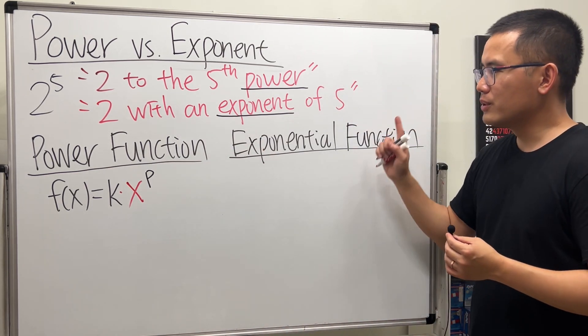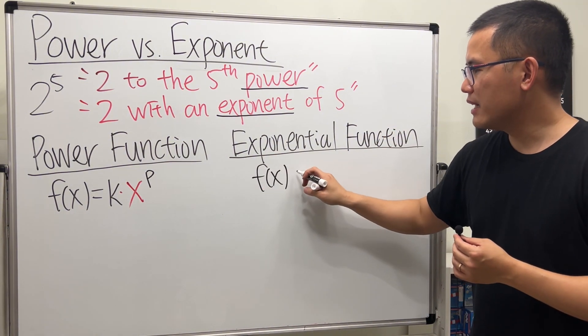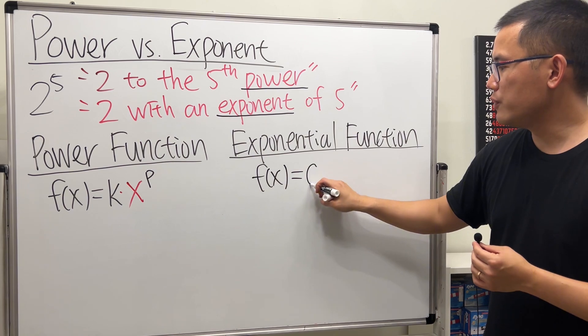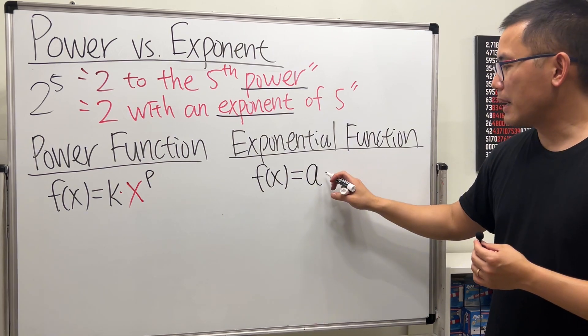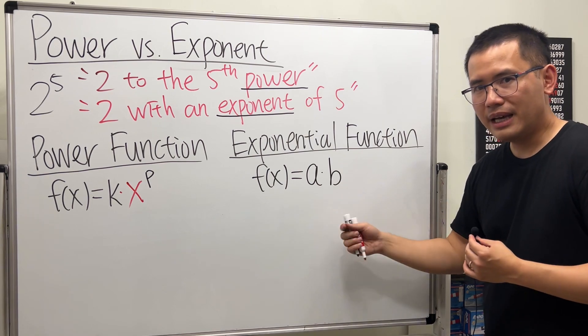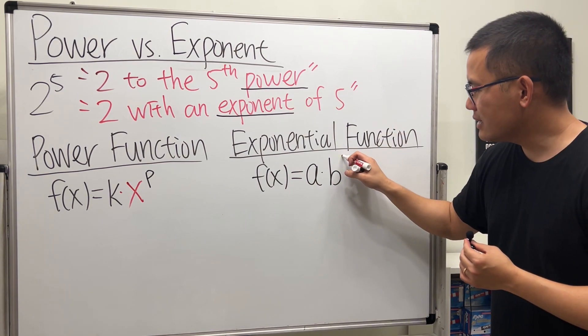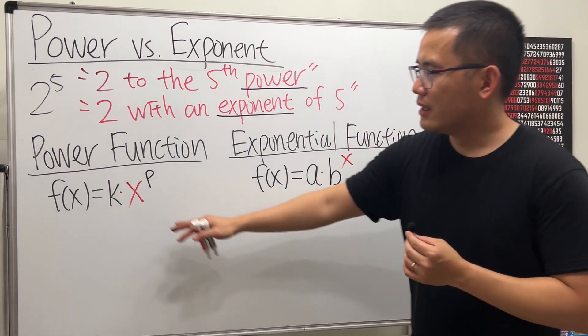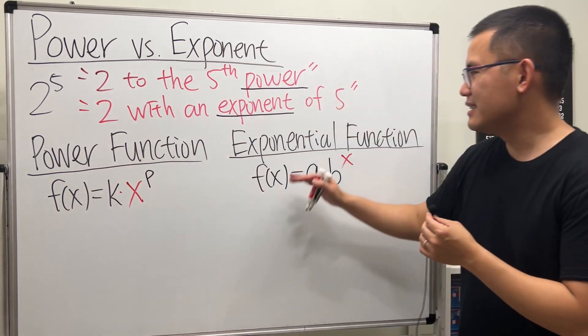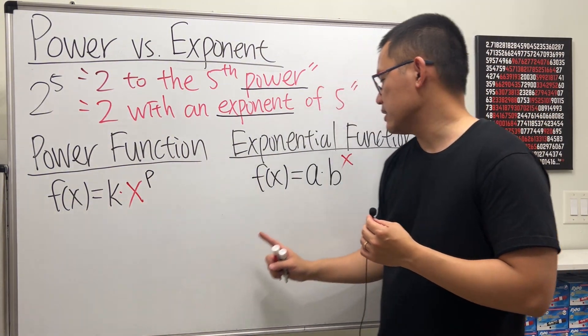As opposed to exponential functions, we will have the form f of x is equal to some coefficient, let's call it a. But here, we multiply by some base b, and you preset this. Now, the exponent is x. So, this is how a power function looks like, and this is how an exponential function looks like. It depends on where the x is.